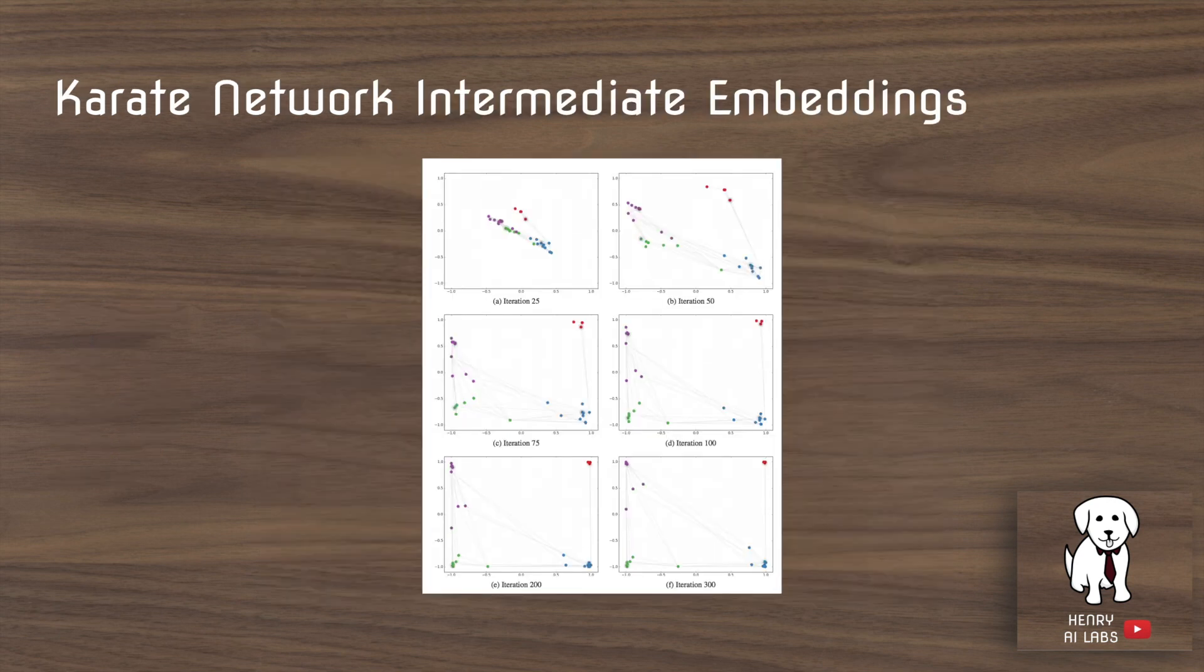This plot just shows how the Karate Network's embeddings look during training of the GCN. So you can see that they get more and more separated as the GCN learns to classify the nodes.